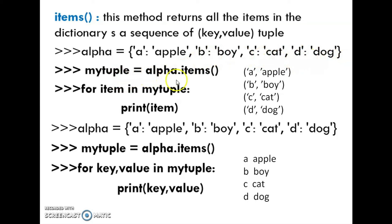We stored the items into the my_tuple variable. For item in my_tuple: print item — we can see the output like this, that is a tuple. How can we identify a tuple? By using this parenthesis: a-apple, b-boy, c-cat, d-dog. Items method returns all the items in the dictionary as a sequence of key-value tuples.